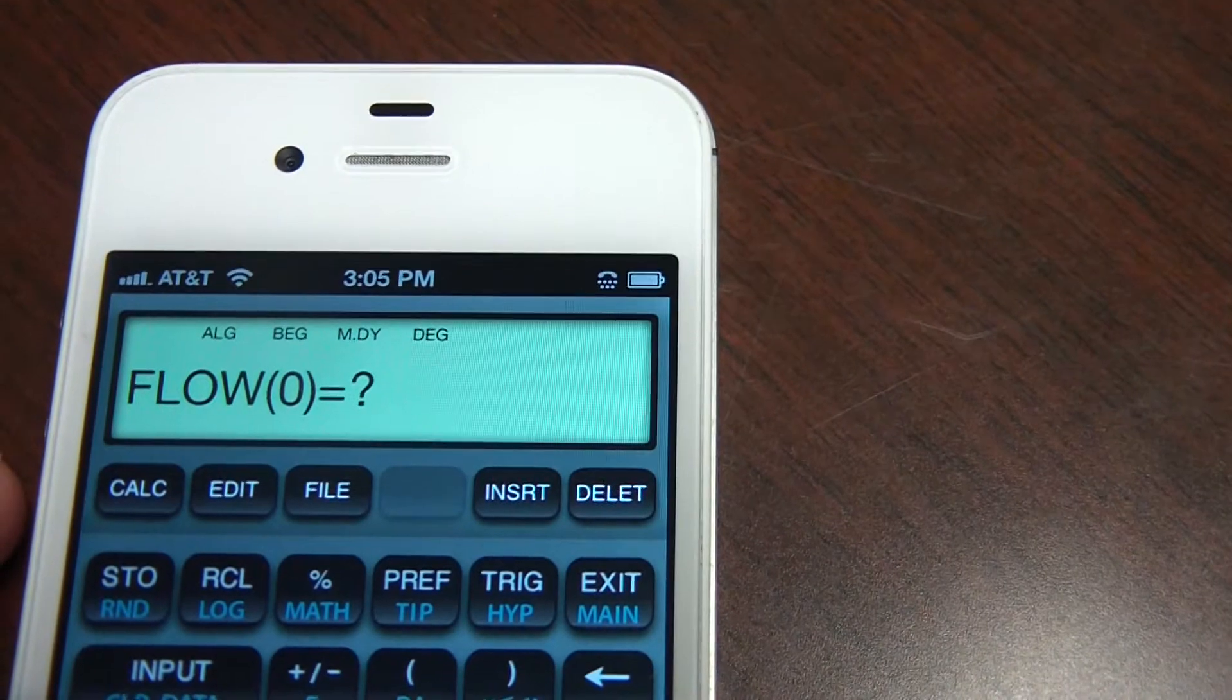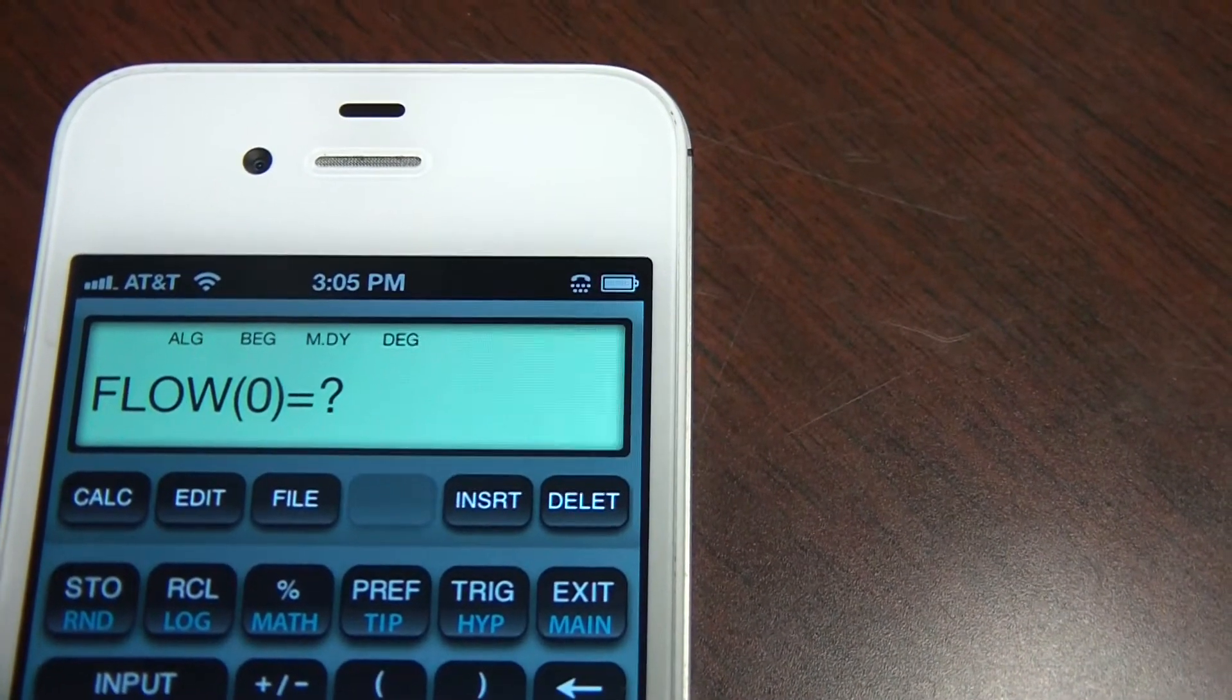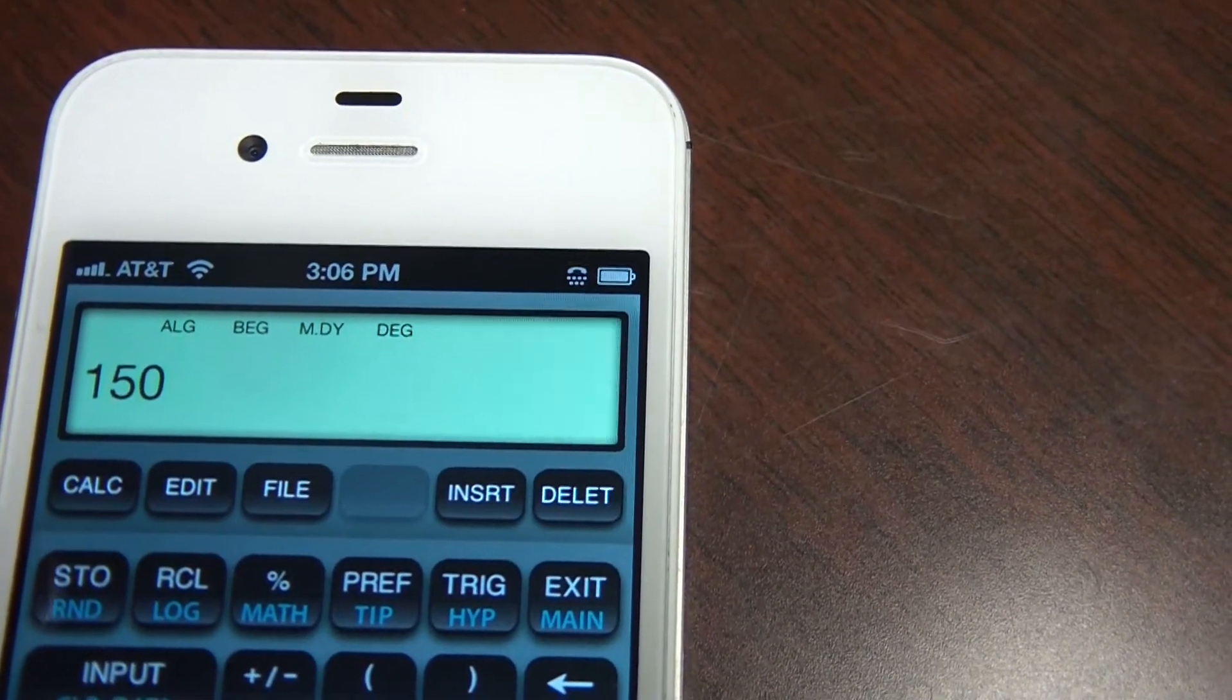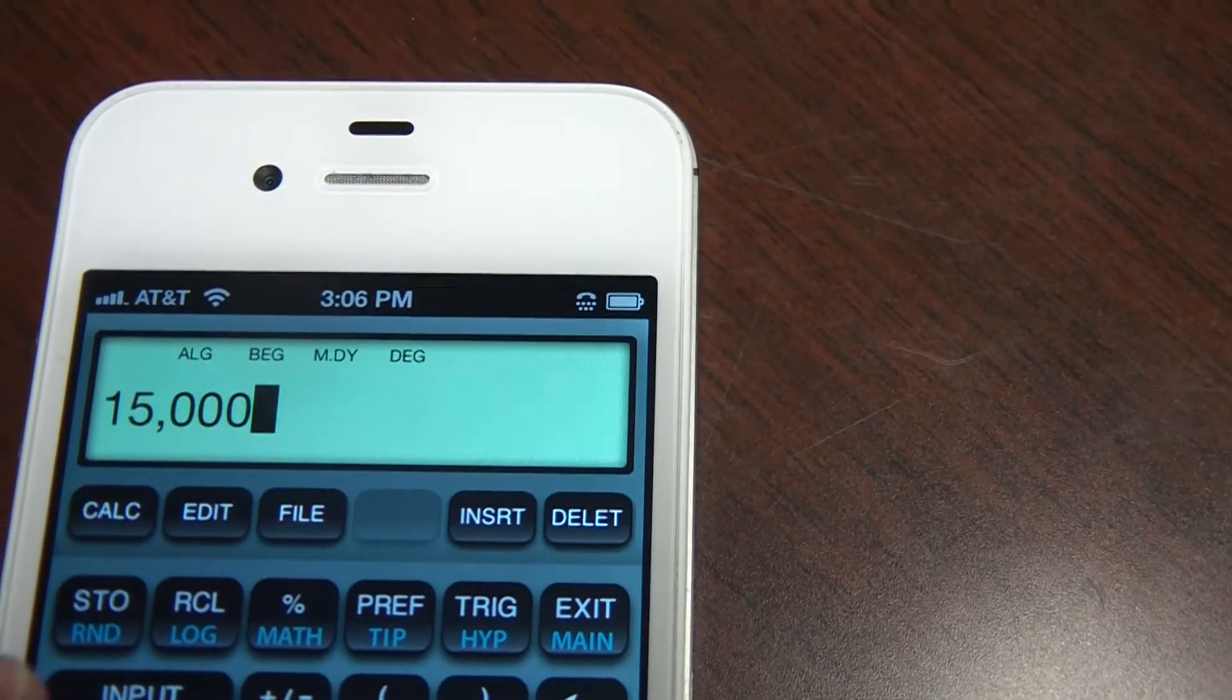It's asking me for flow zero. This is a problem out of our text. First cash flow going out is $15,000. We invest $15,000 into this project. It's negative because it's an outflow.